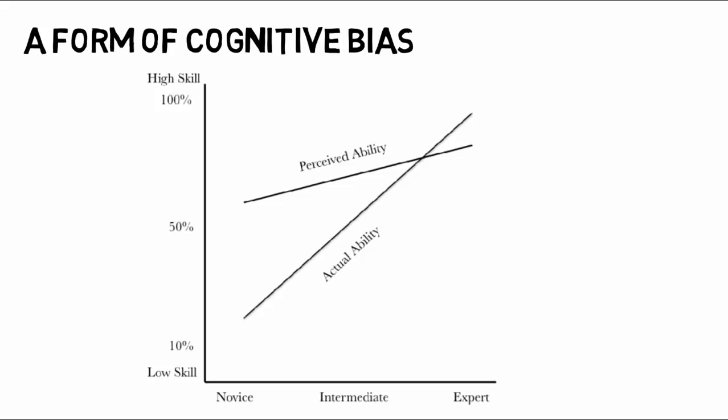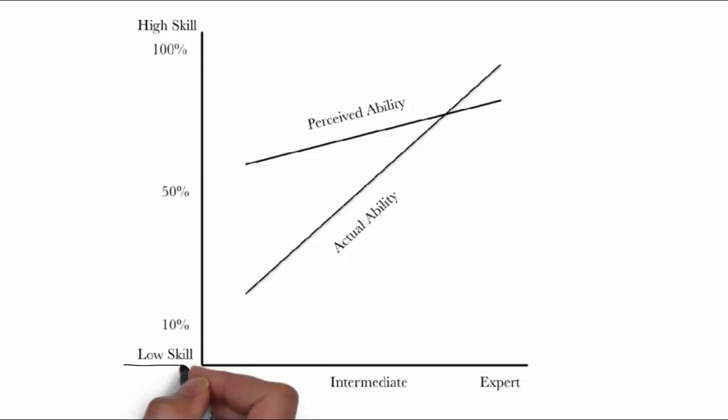We fail to accurately estimate our abilities. While those with low skill—let's call them novices—grossly overestimate their ability, those with relatively high skill—experts—slightly underestimate.